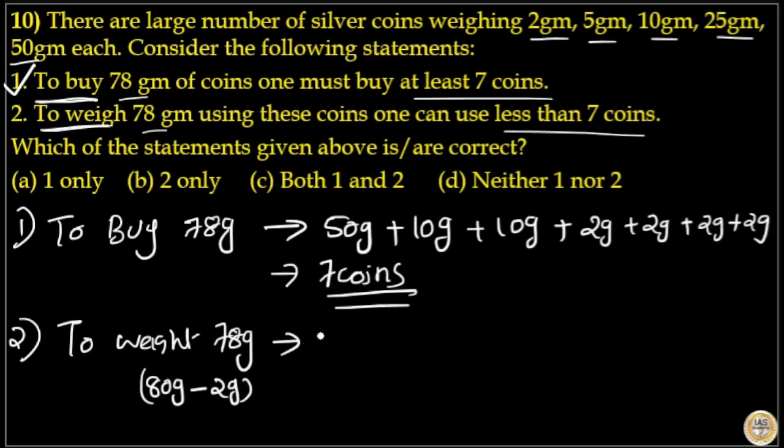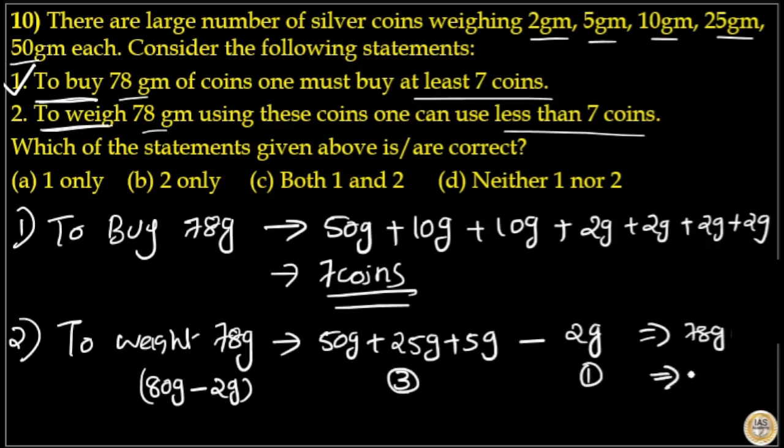That is, in one side, I will take 50 gram plus 25 gram plus 5 gram to take 80 gram weight. And, on the other side, I will take 2 gram weight. So, that means total weight will be balanced as 78 grams. That is, here I will use 3 coins and here I use 1 coin. Total 4 coins. So, I can weigh 78 gram using less than 7 coins. That is, I only need 4 coins to weigh 78 gram. So, statement 2 is also right. So, option C is your answer.